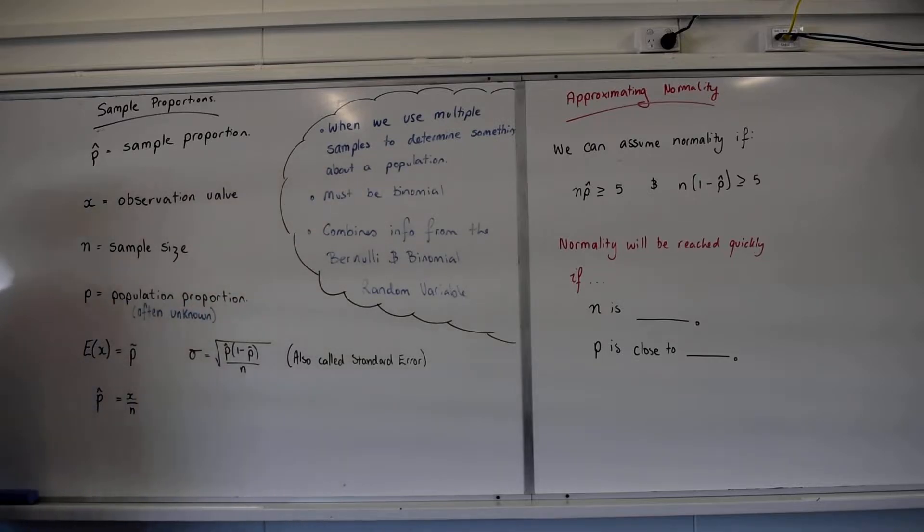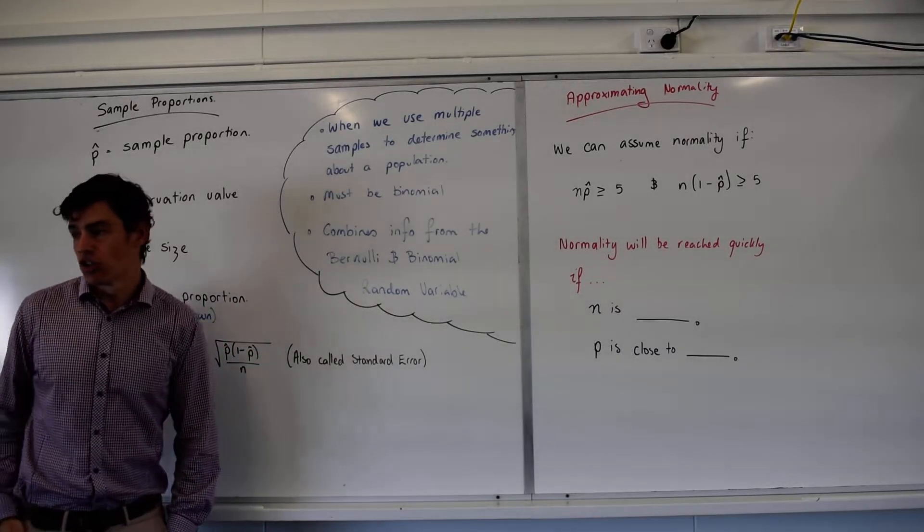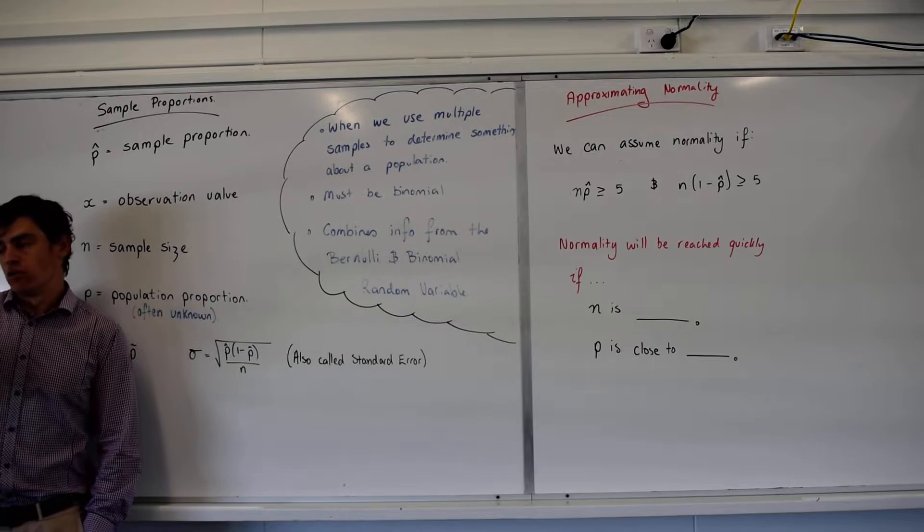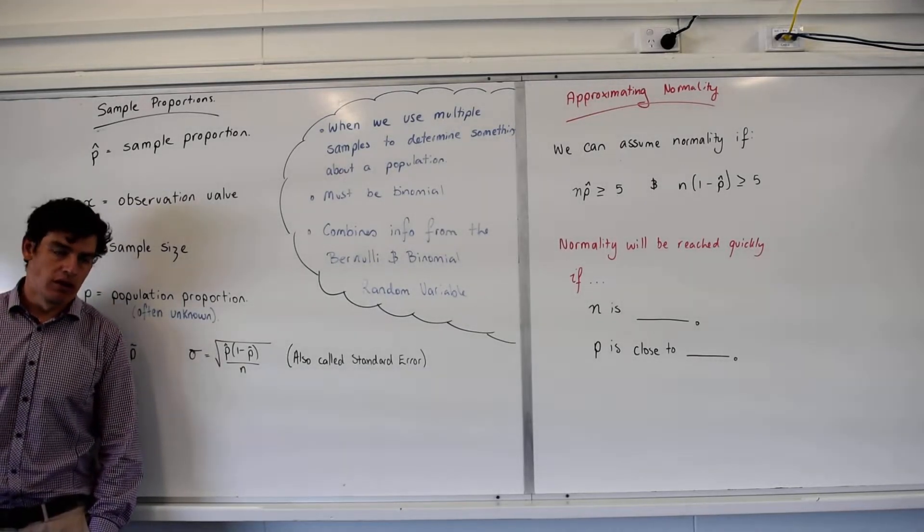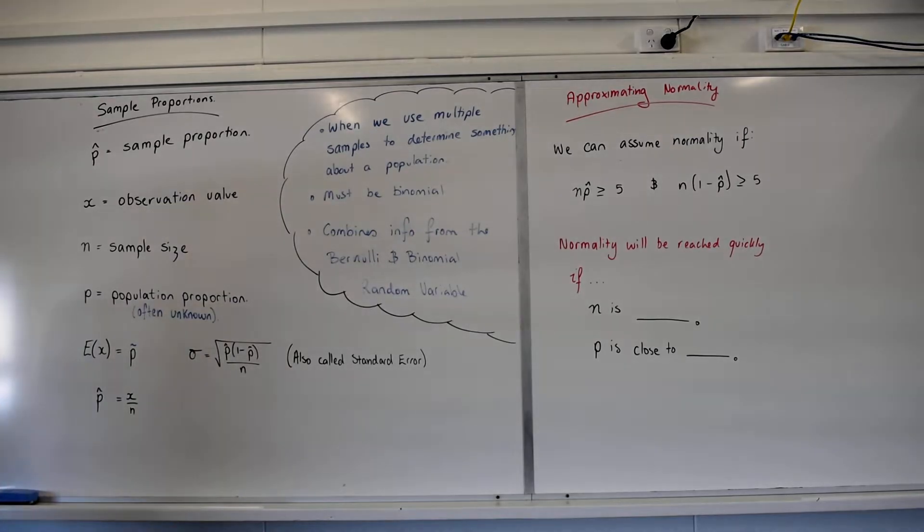These are linked very closely to the central limit theorem and it's about saying if we want to find something out about a population, it's got to be binomial, so it's a success or failure. Do you like vegetables? Do you support Queensland? Success or failure sort of information.